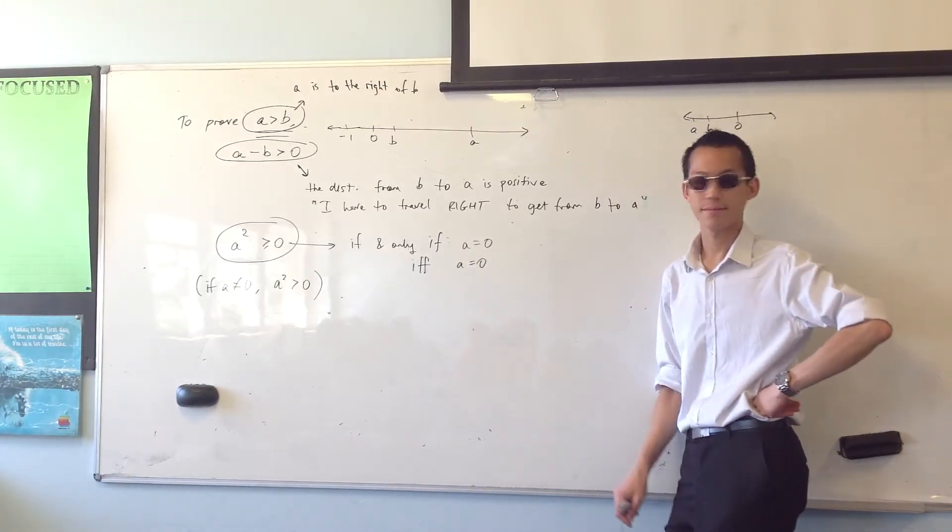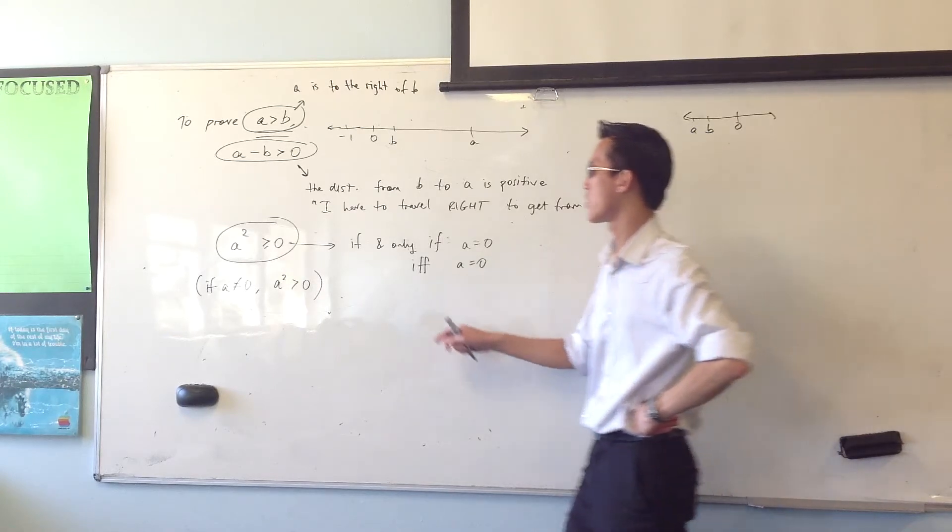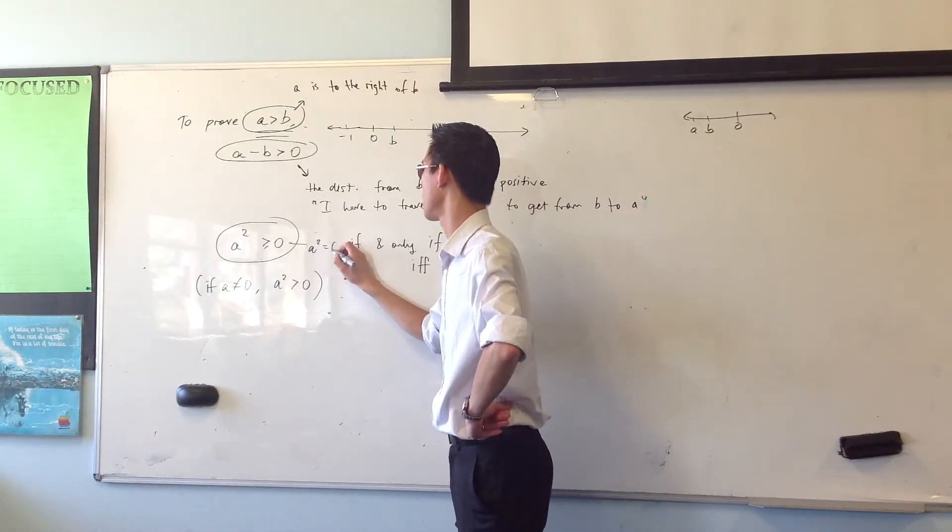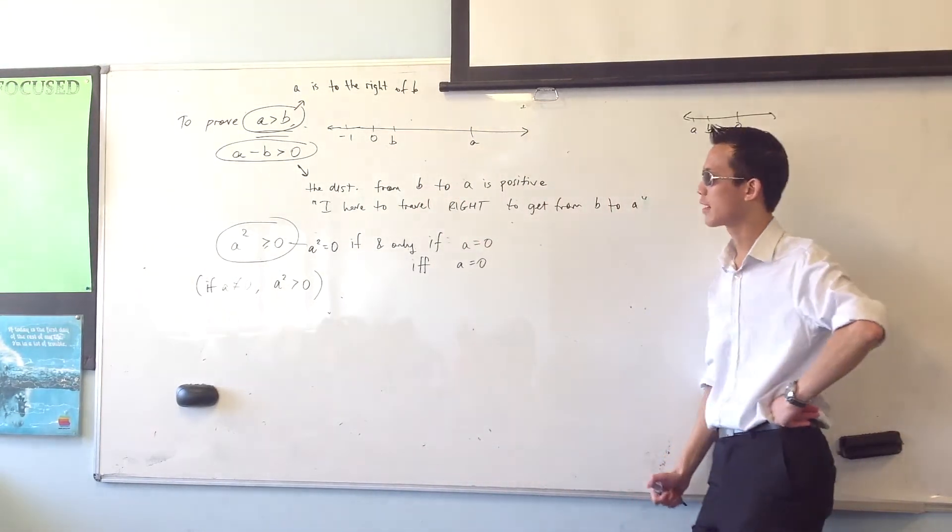Do you mean a squared equals zero if and only if a equals zero? Yes, sorry. Wait. Hold on. A squared is equal to zero. There we go. Okay. That's what I meant to say. Thank you.